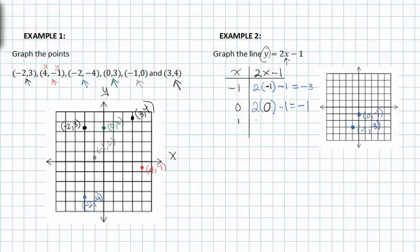Lastly, if we put one in for x to find y, we get one. So our next coordinate point is (1, 1). Notice that all our dots are in a nice line, and we're able to connect them to create a line.